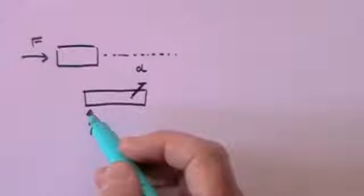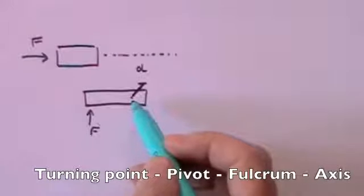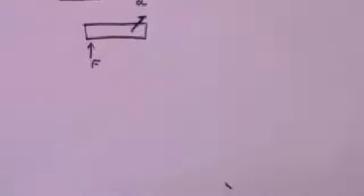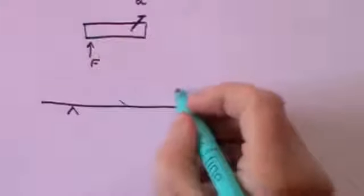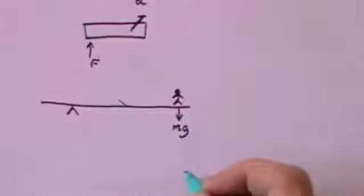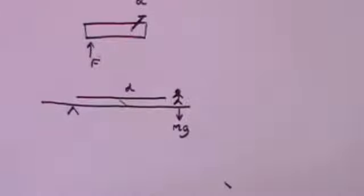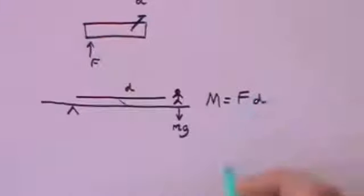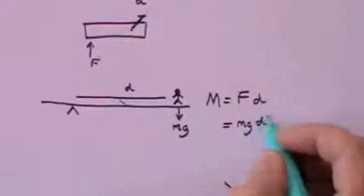A moment of a force requires a turning point, sometimes called a pivot, sometimes called a fulcrum, sometimes called an axis, around which to turn. So if we take a plank, here is a fulcrum or turning point or pivot point, and I stand on the end here, and I'm going to have a force acting downwards which will be my mass times gravity. And let's say that I'm a distance d from the pivot point, then the definition of the moment of a force is that it is equal to the force times the distance from the pivot point, which in this case will be my mass times g times d.